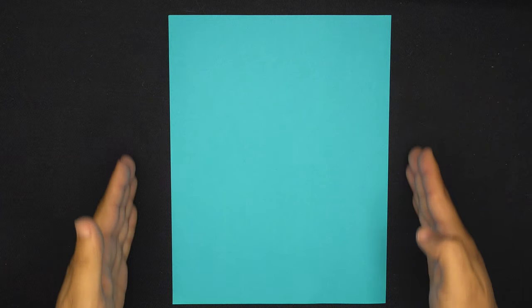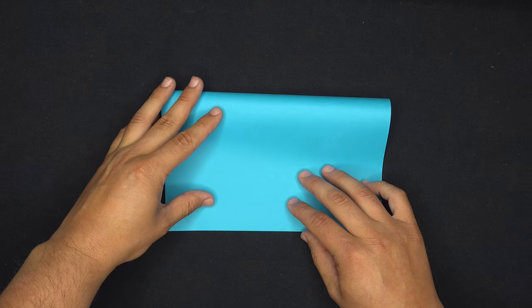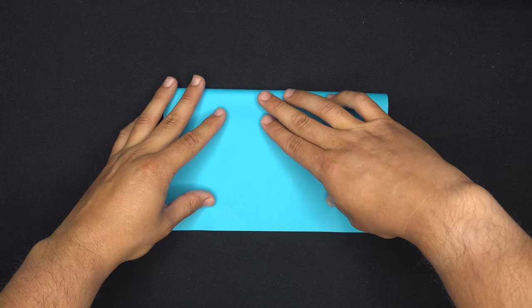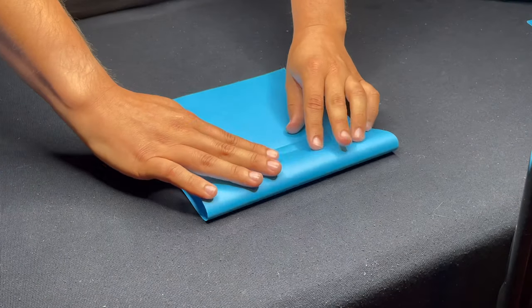Hold the paper with the longer edges up and down and take the top and fold it down to the bottom. Line up the edges and make a nice sharp crease on top. Then you can unfold the paper and we're going to take the top and bottom edges folding it into that new crease that we made.